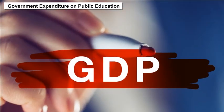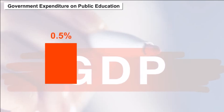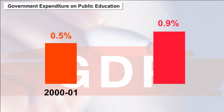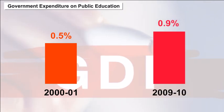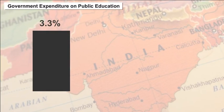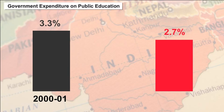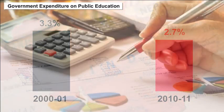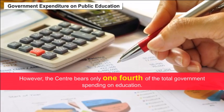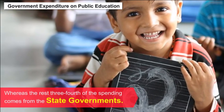We can observe an increasing trend in central government education spending, moving up from 0.5% of GDP in 2000–2001 to 0.9% of GDP in 2009–2010, while the state's share declined from 3.3% of GDP in 2000–2001. However, the centre bears only one-fourth of total government spending on education, whereas the remaining three-fourths comes from state governments.